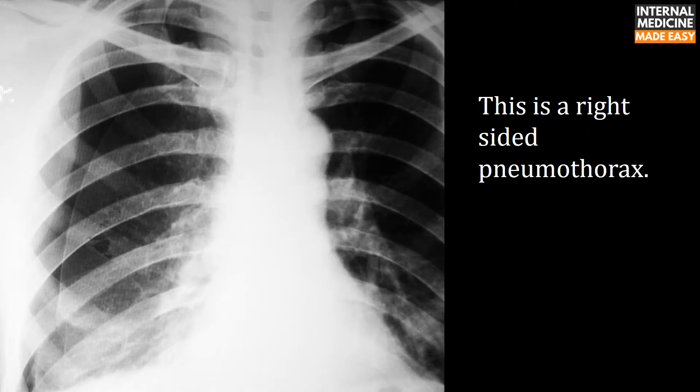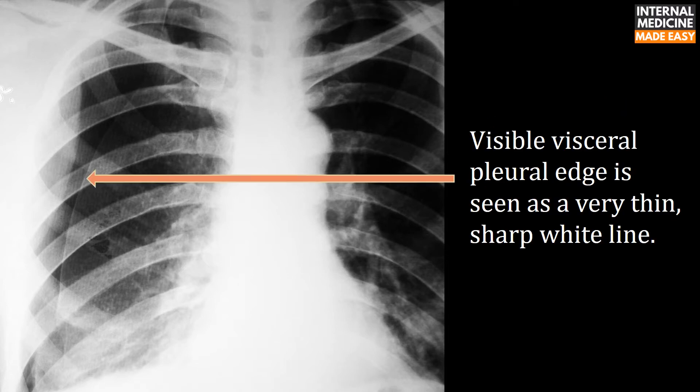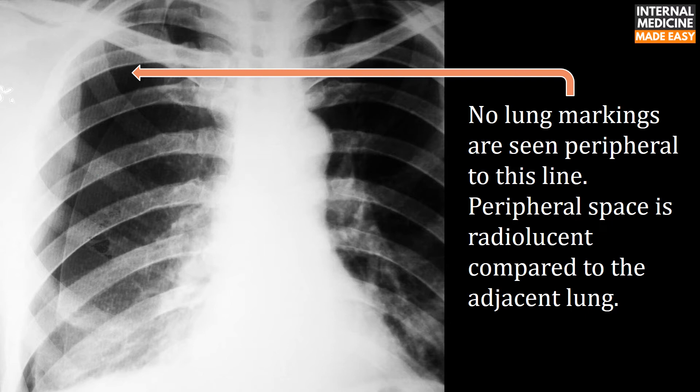This is a right-sided pneumothorax. The visible visceral pleural edge is seen as a very thin, sharp white line. No lung markings are seen peripheral to this line. The peripheral space is radiolucent compared to the adjacent lung.